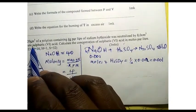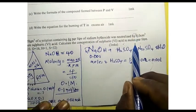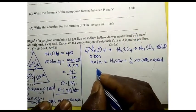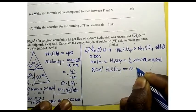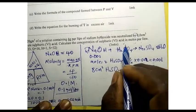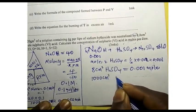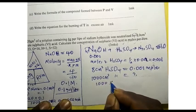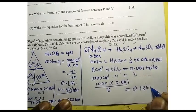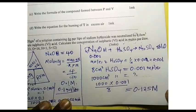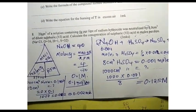We know the volume of dilute sulfuric acid used was 8 cm³, and it contains 0.001 mol. To find the molarity, we scale up: 8 cm³ contains 0.001 mol, so 1000 cm³ contains 1000 times 0.001 divided by 8, which equals 0.125 M. The molarity, which is moles in one liter, is 0.125 mol per liter.